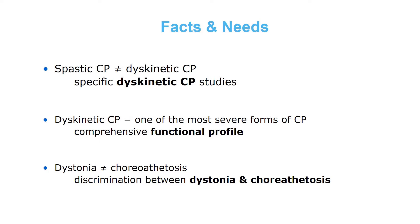We set up this study based upon several needs. First, there are large differences between CP types — findings in the spastic CP population cannot be generalized to dyskinetic forms. Therefore, we need specific dyskinetic CP studies. Second, dyskinetic CP is one of the most severe forms of CP with high impact on functional activities, so we need a comprehensive functional profile. Third, dystonia and chorioathetosis are distinct movement disorders, so we need to discriminate the impact of dystonia and chorioathetosis on functional activities.